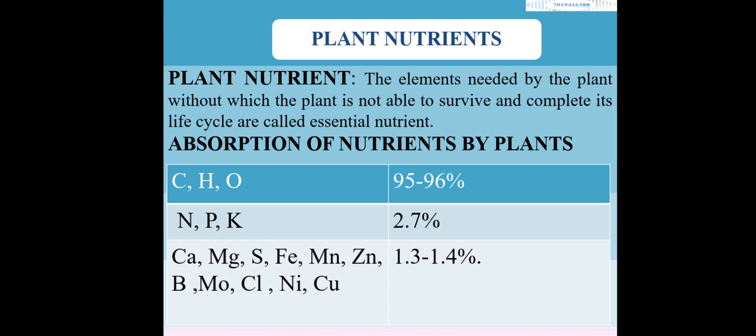Next is absorption of nutrients — how much amount of these essential elements are required by the plant for normal functioning. In the first column, C, H, O — carbon, hydrogen, and oxygen — are required in a very high amount: 95 to 96 percent. In the second column, NPK — nitrogen, phosphorus, and potassium — are required in 2.7 percent. Next, calcium, magnesium, and sulfur come under secondary nutrients, and all the micronutrients are required in very less amount.